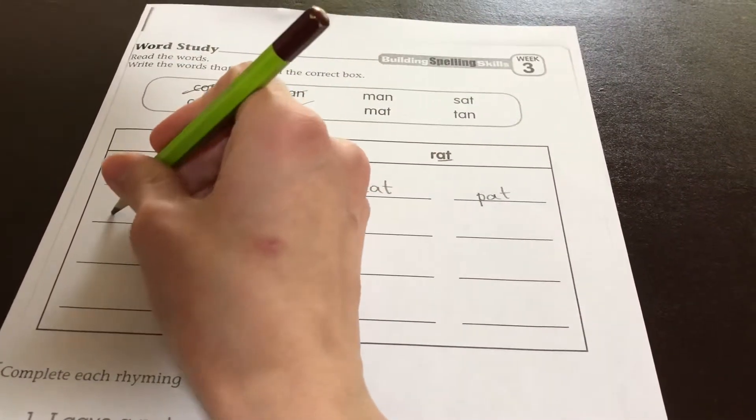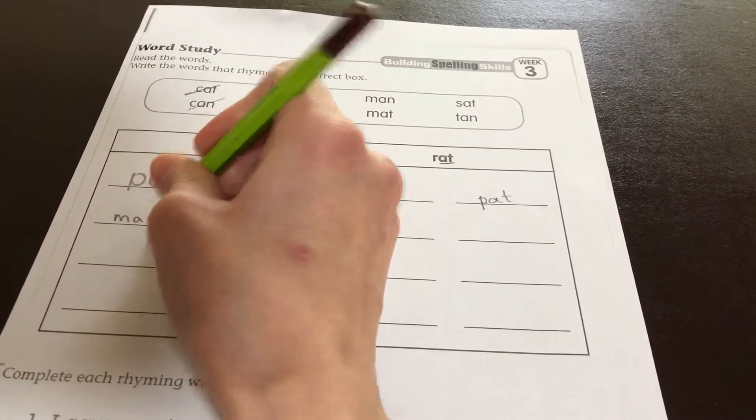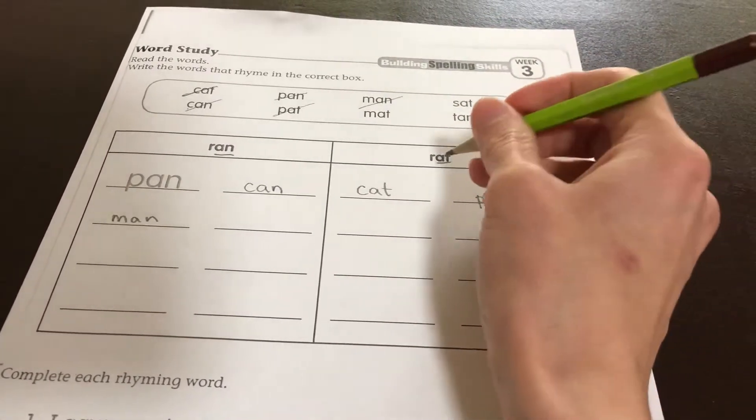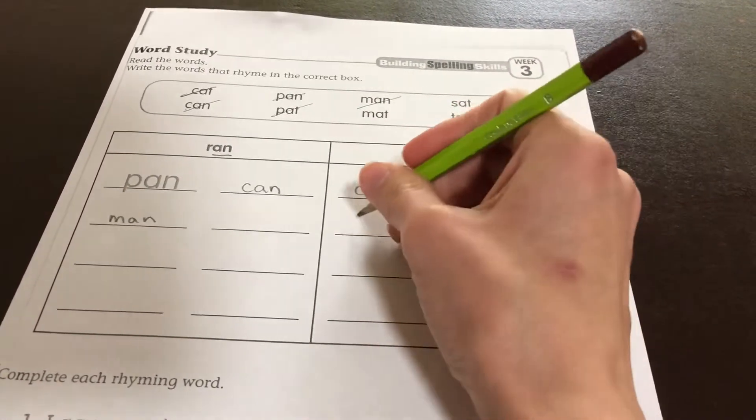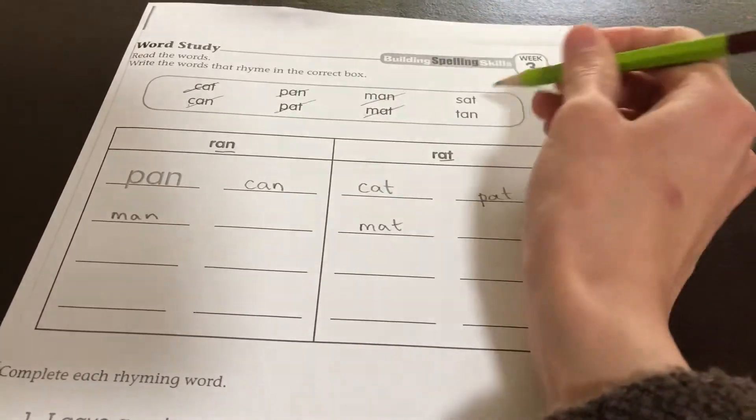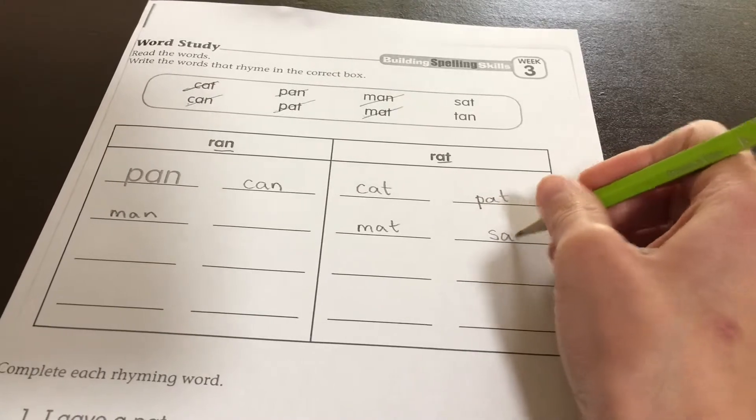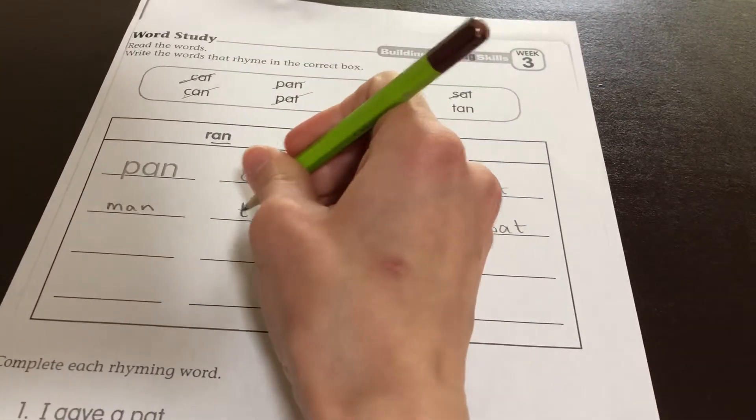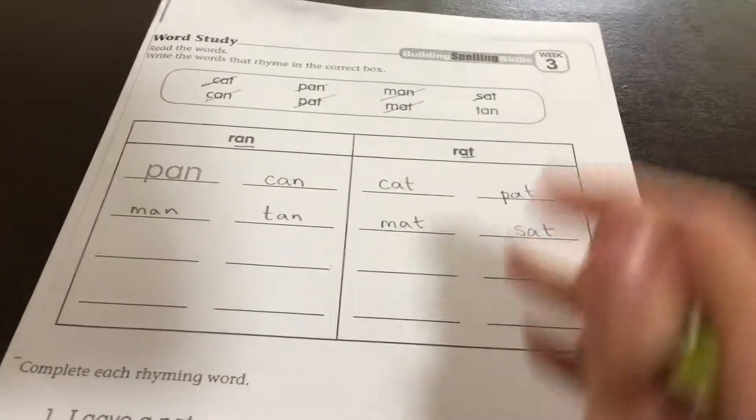Man goes with ran, pan, and can. Mat. Mat goes with rat, cat, pat. Sat. Sat also goes with rat. And we have tan. Tan goes with ran, man.